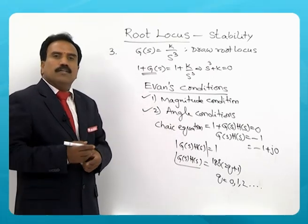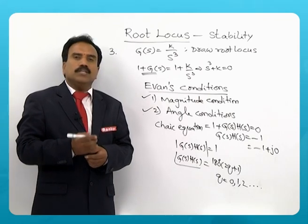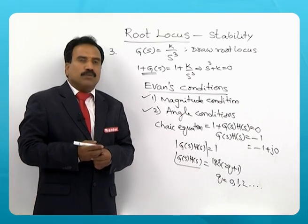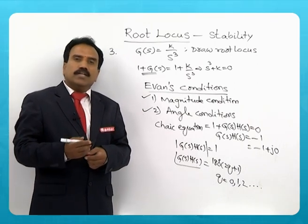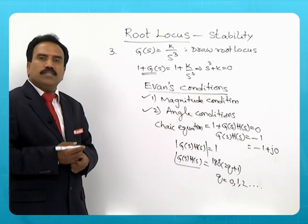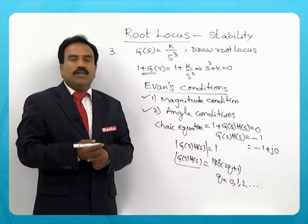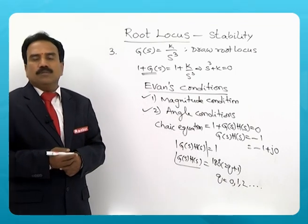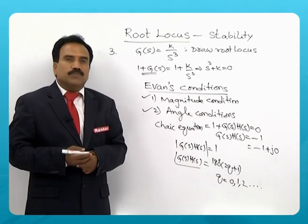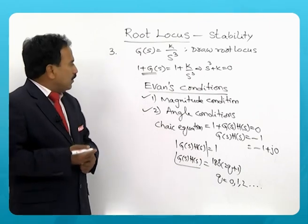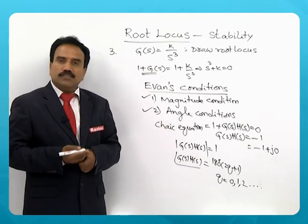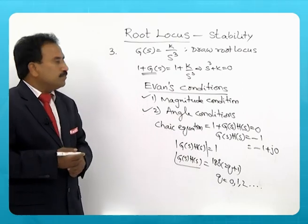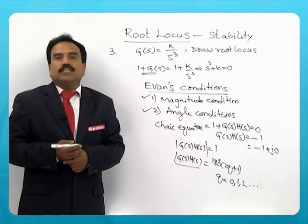Root locus is not only used to find the stability, but also to find the value of k for marginal stability, finding the undamped natural frequency, finding the value of gain for different values of damping ratio, and determining relative stability. We will now look at the rules to construct the root locus according to Evans' conditions.